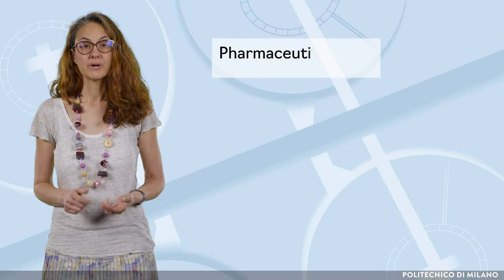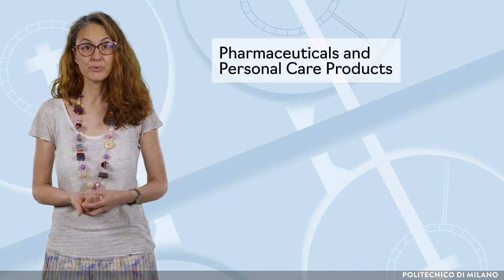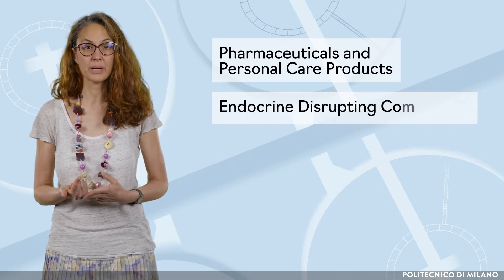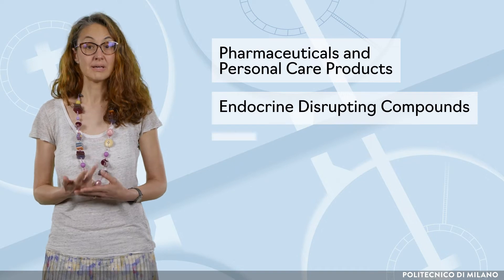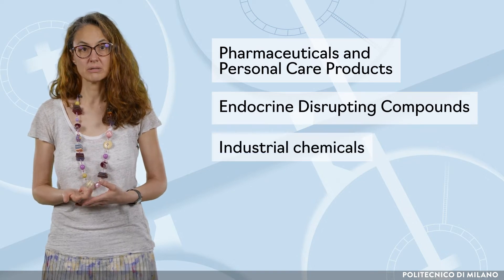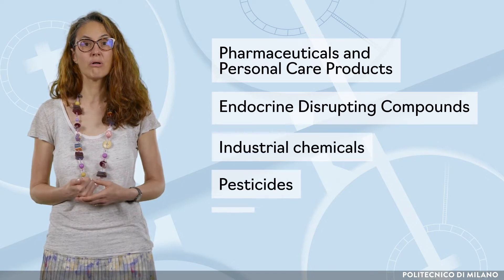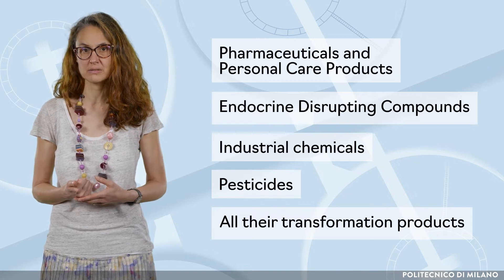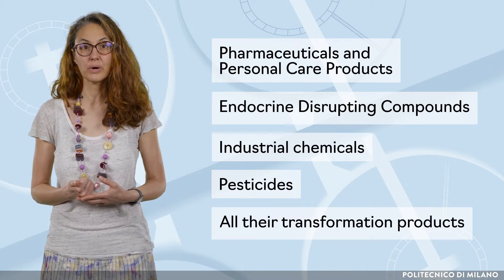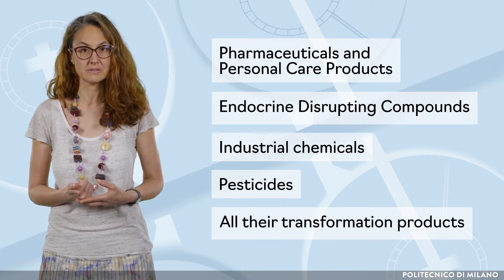Among these there are, for example, pharmaceuticals and personal care products, endocrine disrupting compounds, industrial chemicals, pesticides and all their transformation products, which are often still not well characterized. Due to technological innovations, the list of CACs cannot be exhaustive and needs to be constantly updated.